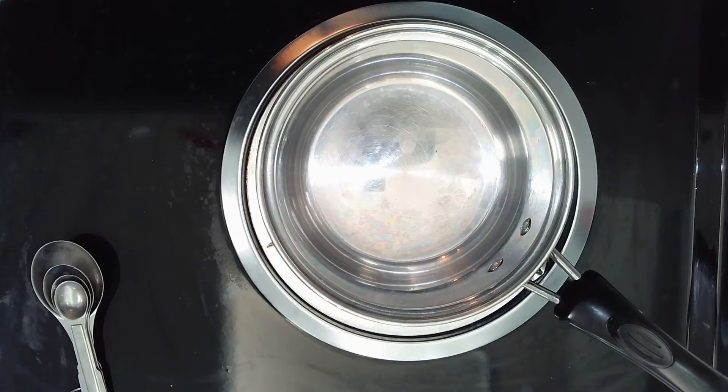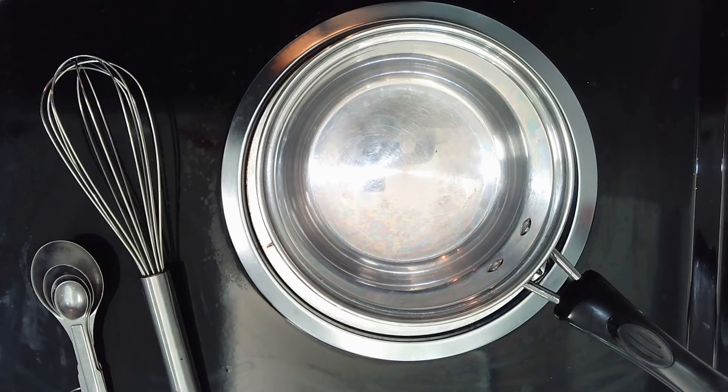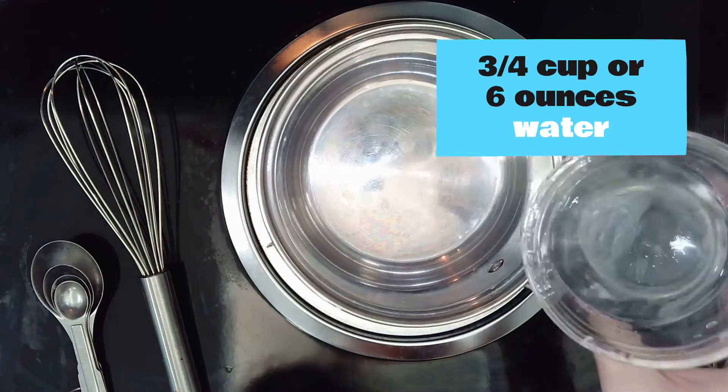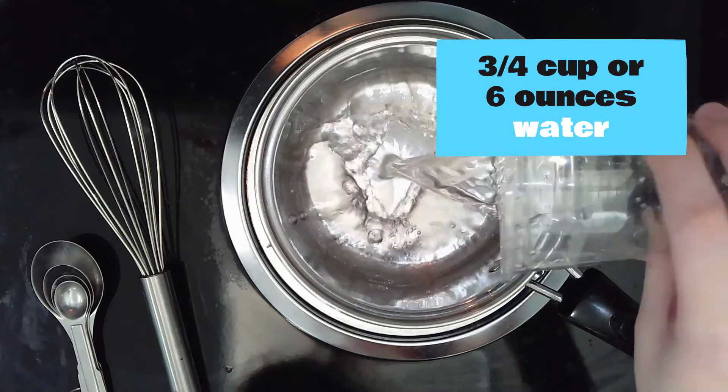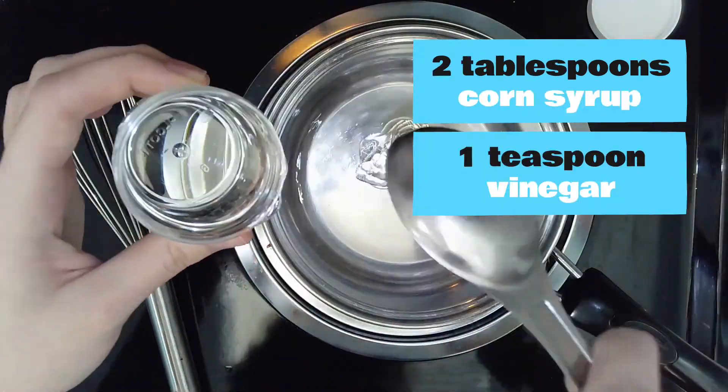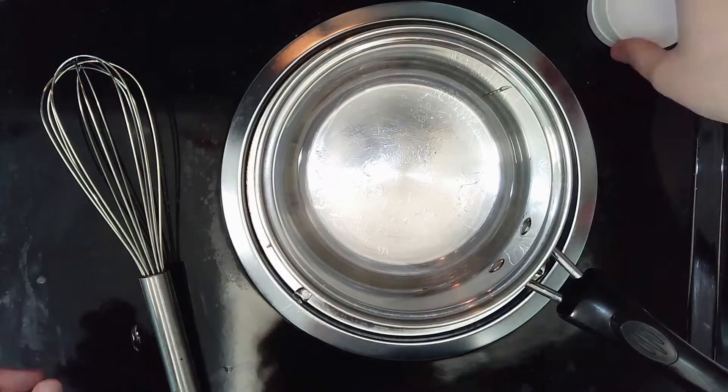Since we're making bookmarks you can plant, we want to be sure that all the components we will use will be broken down easily in soil, so we're going to start by making our own compostable glue. Start by pouring three-quarters of a cup of tap water into your saucepan. That's six ounces if you're using the plastic measuring cup in your kit. Stir in two tablespoons of corn syrup and one teaspoon of vinegar, then turn the stovetop to high.